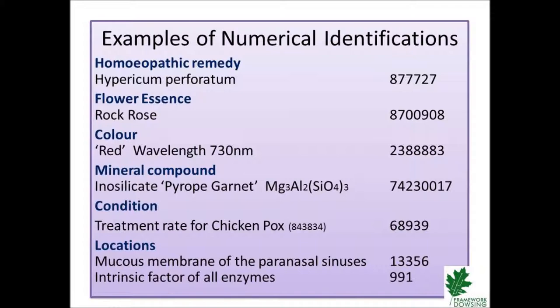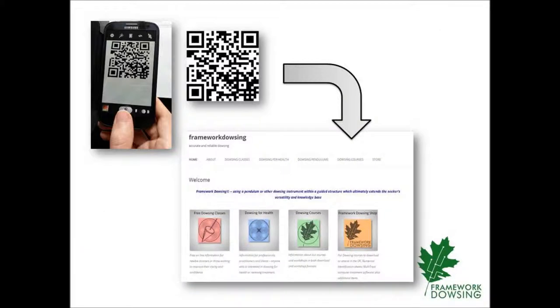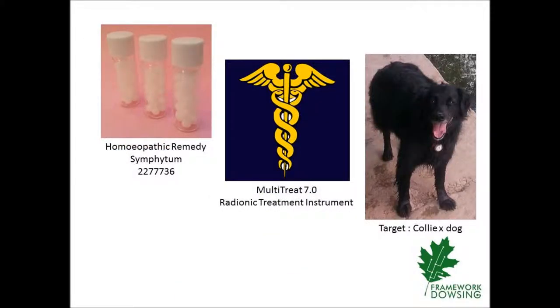On the Framework Dowsing website there is more information on conditions, enzymes and biochemistry if you are interested. These numerical identifications are used to represent the different treatments. You could use an analogy of quick response or QR codes — two-dimensional, seemingly random patterns which speedily connect a mobile phone directly to a blog post or website. Numerical identifications quickly represent the corrective treatments being sent to the client or target by the practitioner, entered into the MultiTreat 7 computer treatment application or other radionic treatment instruments or programs. MultiTreat then becomes the focus for the practitioner's specific treatments as outlined in their analysis.